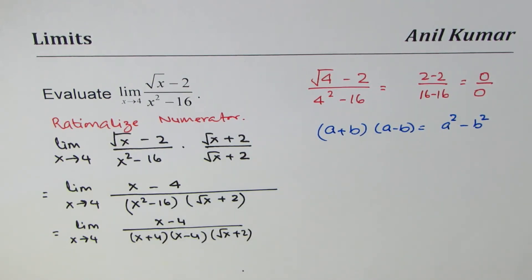So now you can see a common factor in the numerator and denominator which can be cancelled, which is x minus 4.